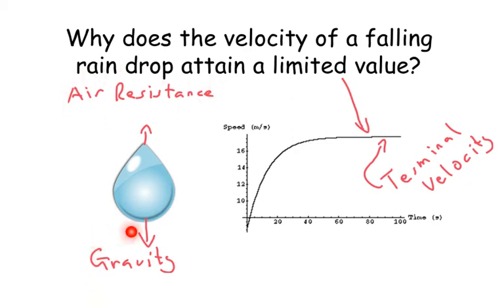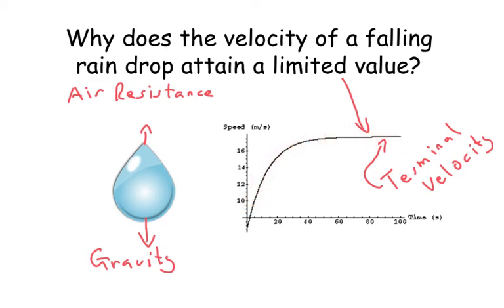When these two forces become equal and opposite, the net force on the raindrop is zero. So eventually the speed increases, but here we get to a terminal velocity — that's when the air resistance and the force of gravity are equal.